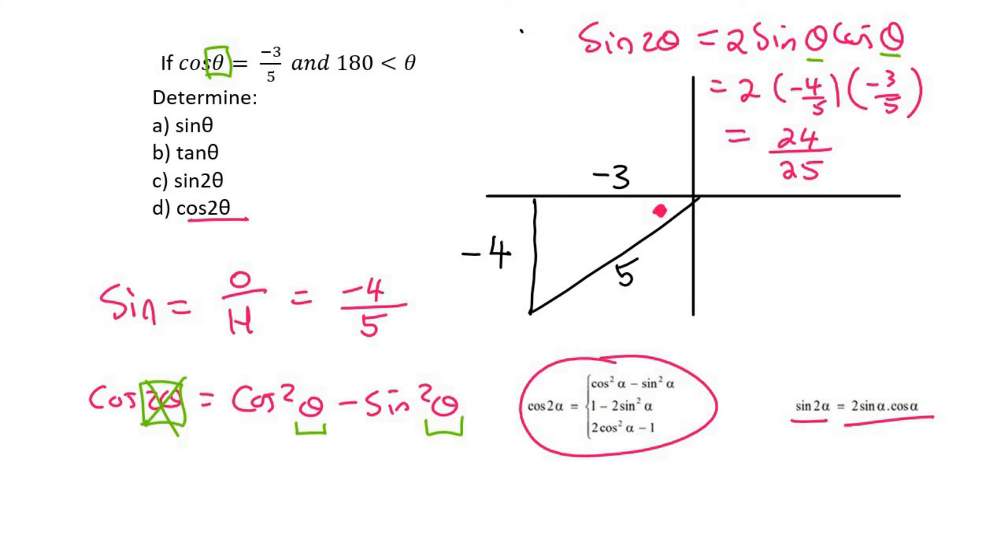We can now say cos theta squared minus sin theta squared. So cos theta is negative 3 over 5, and then sin theta we already worked out as negative 4 over 5 squared.